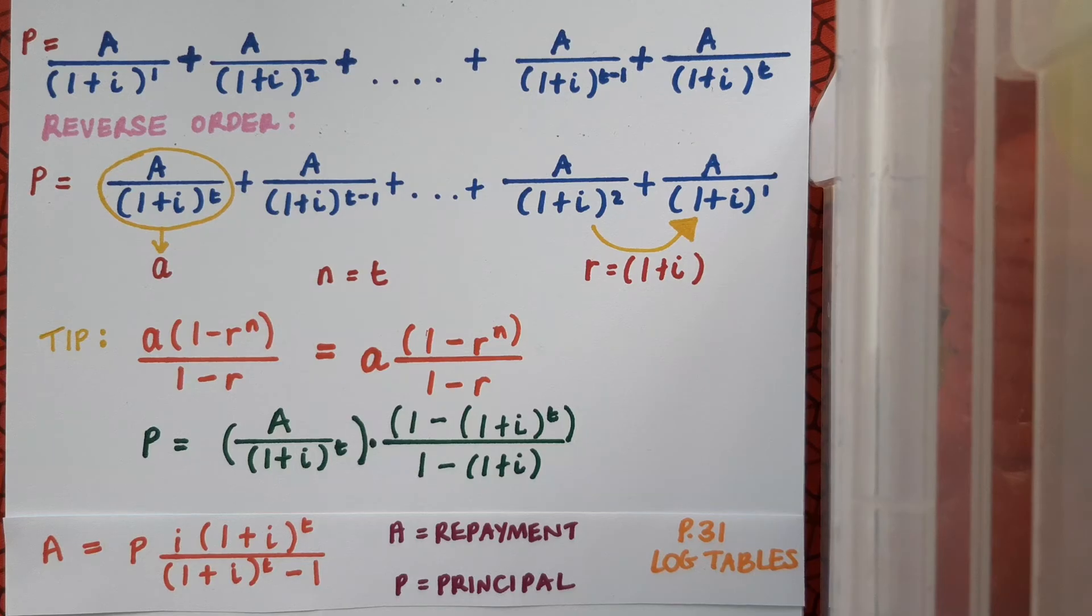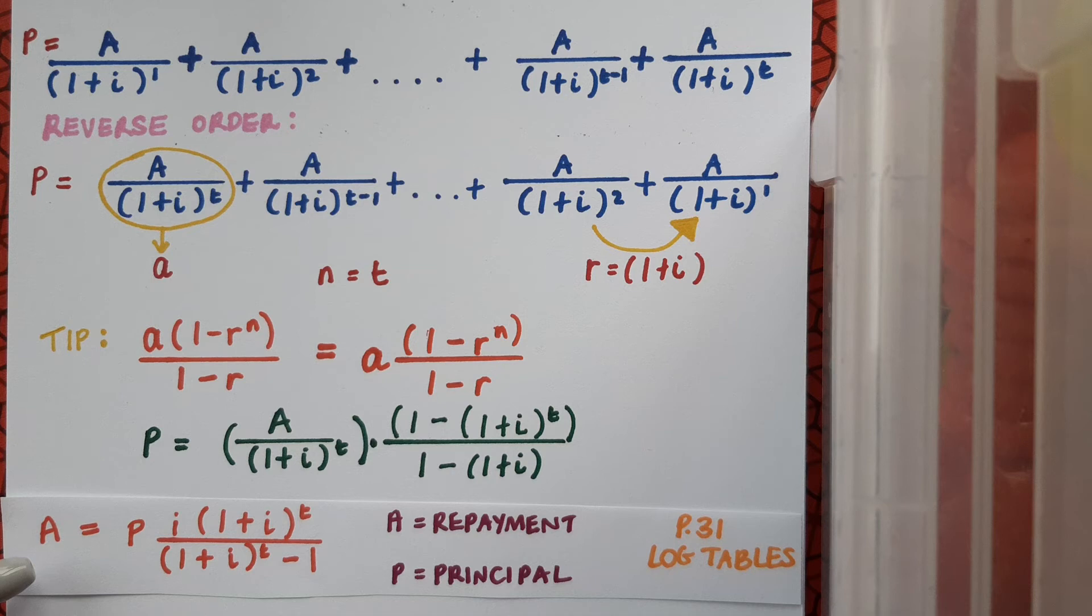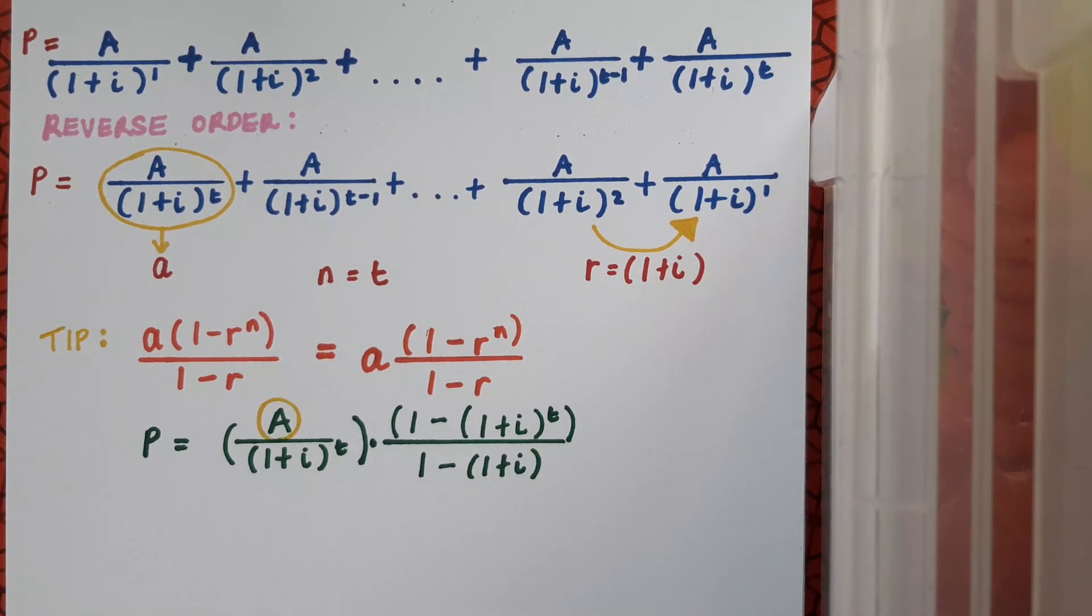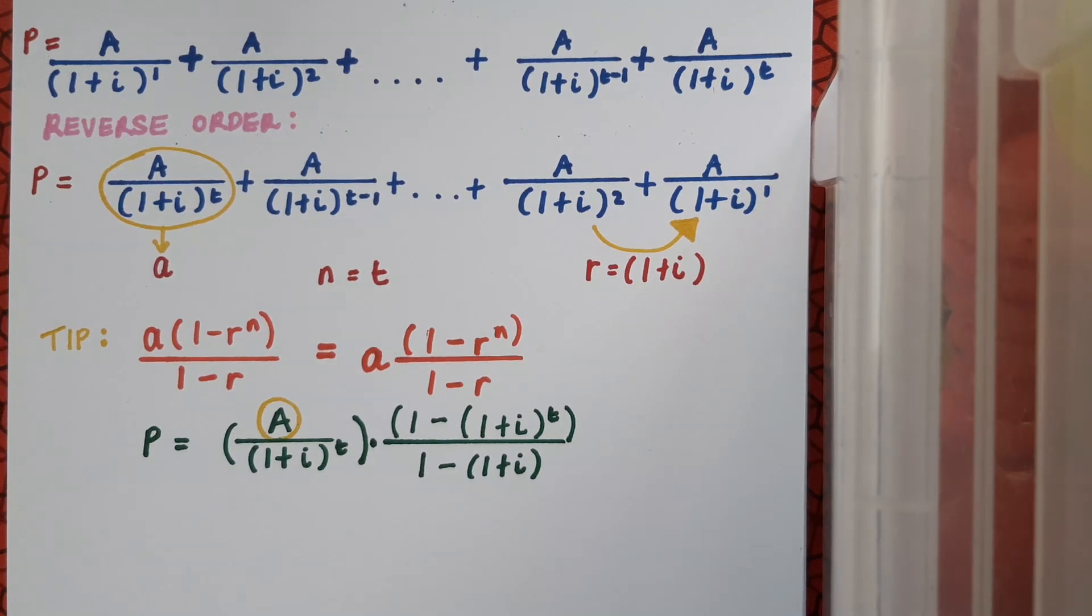But it looks like we're off to a good start. We can see in the log tables formula how A is by itself on the left hand side of the equation. So I'm going to try and isolate A in this equation also. So I'll leave A where it is and I'll move everything else across to the left hand side of the equation. And if you feel confident now doing that yourself then by all means pause the video here and off you go and then you can play and see how you got on. Don't forget that anything that's in the denominator over here is going to end up in the numerator when it moves to the left and anything in the numerator is going to end up in the denominator.